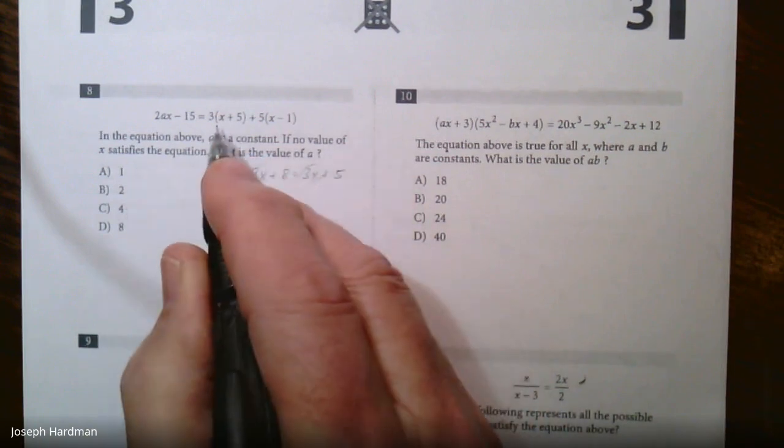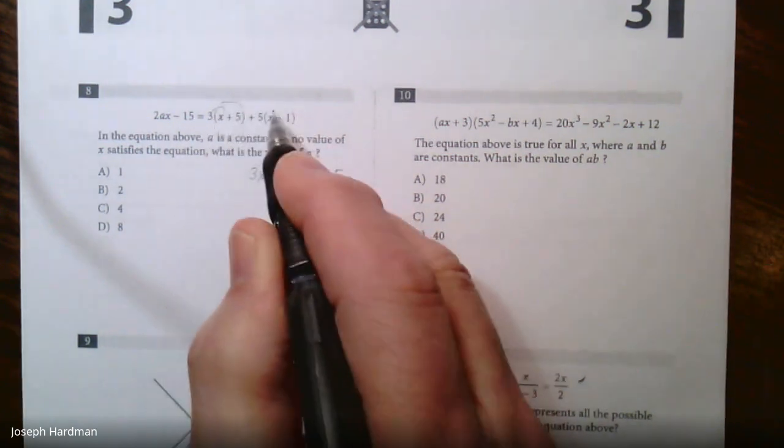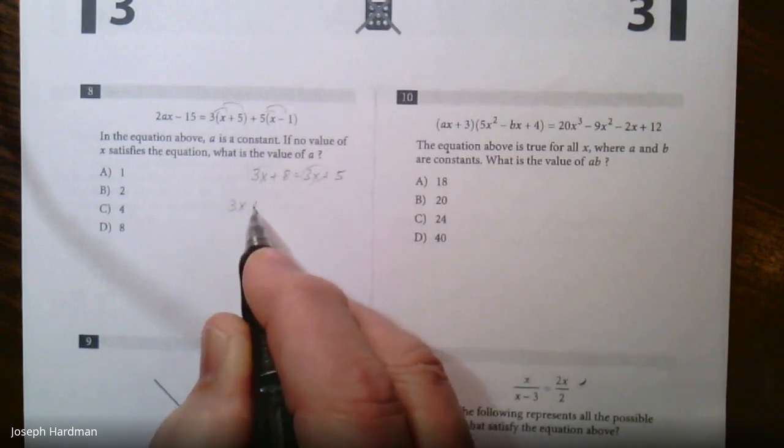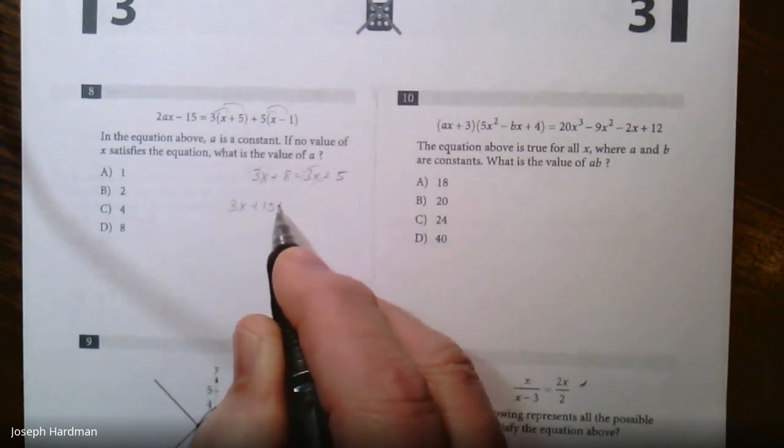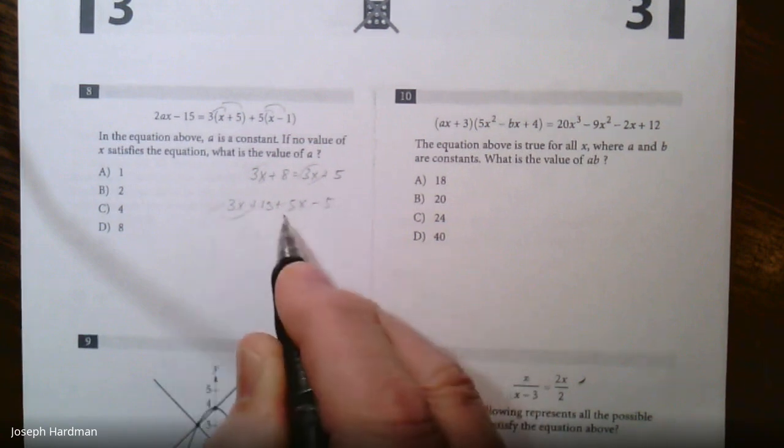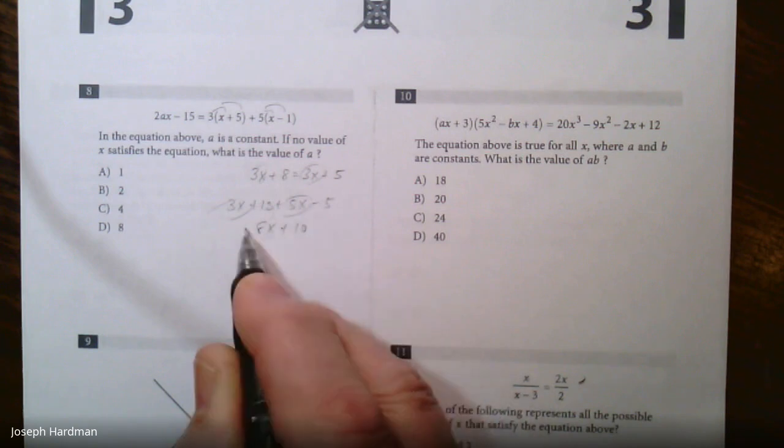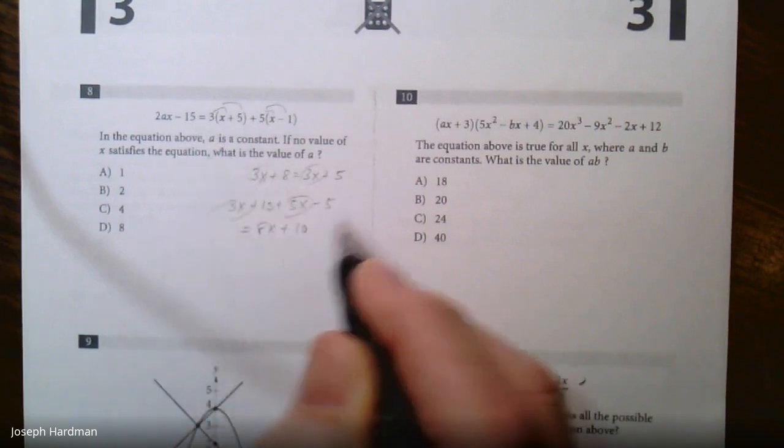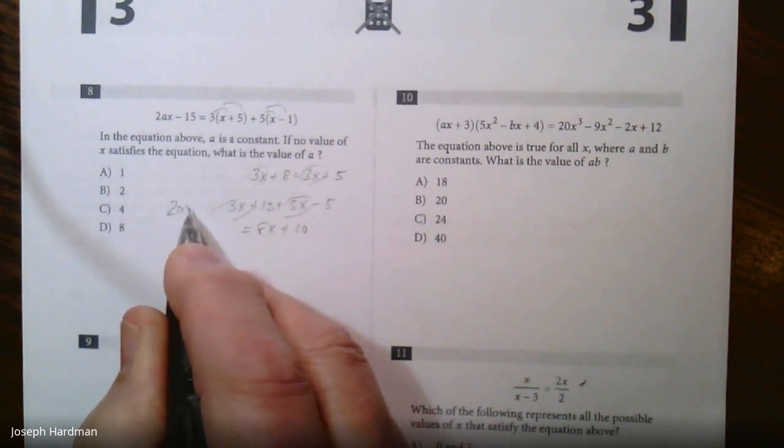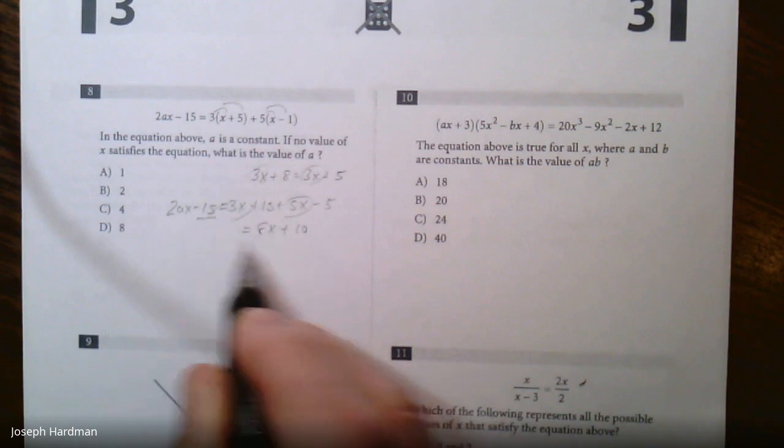So I'm going to distribute the 3 and distribute the 5. So I got 3x plus 15, and then I got 5x minus 5. So if I clean this up, remember like terms, it's 8x. 15 minus 5 is 10, so that side I get 8x plus 10.